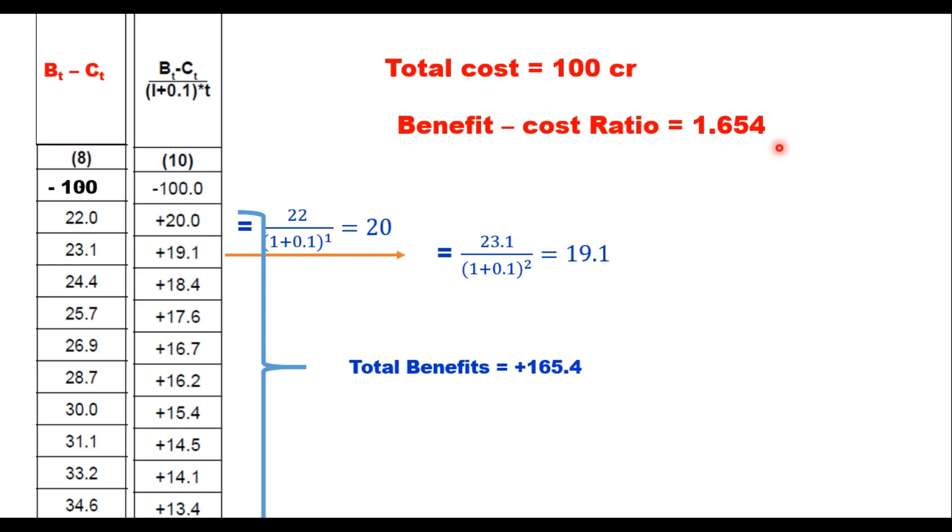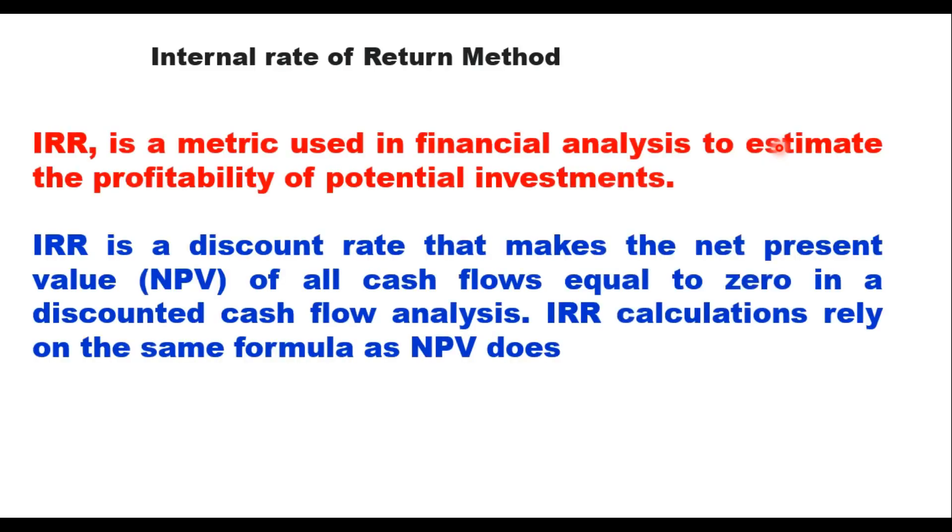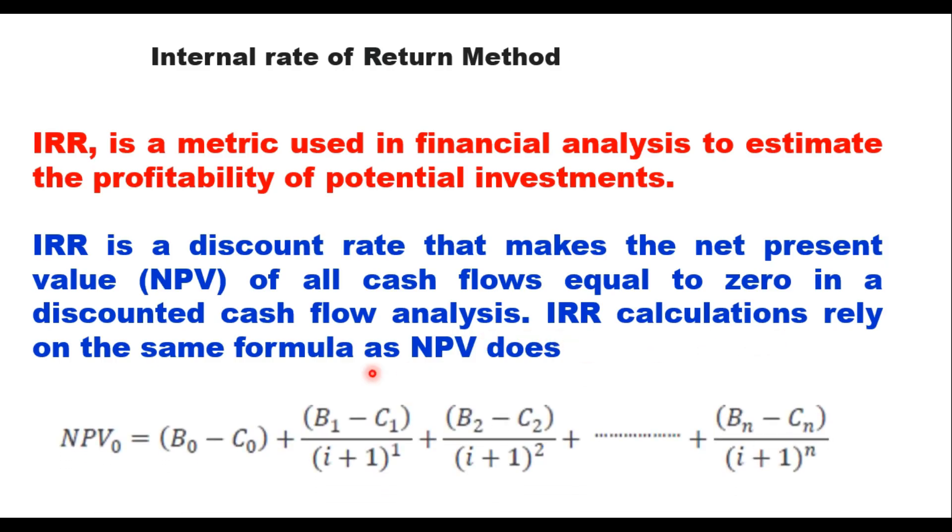The third method is internal rate of return method. This internal rate of return is a metric used in financial analysis to estimate the profitability of potential investment. It is a discount rate that makes the net present value of all cash flows equal to 0 in a discounted cash flow analysis. IRR calculations rely on the same formula as NPV.